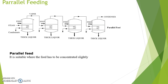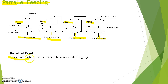The last method is parallel feeding. In parallel feeding, feed is supplied to all effects — first, second, third, and fourth — separately, and the product is also collected as thick liquor from all the effects. This method is suitable for feeds that need to be concentrated only slightly, meaning it should be used in cases where a less concentrated product is necessary. This covers evaporation, its objective, the multiple effect evaporator, and its feeding arrangements.